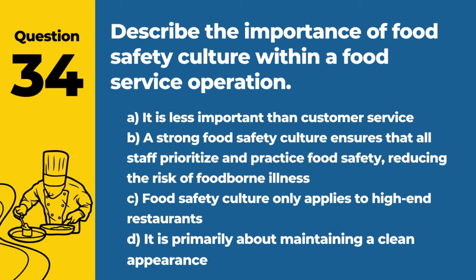Question 80. What factors contribute to the virulence of E. coli O157:H7 in ground beef? Answer: B. Its ability to survive under acidic conditions and low cooking temperatures. E. coli O157:H7's resilience in various environments makes it a particularly dangerous pathogen in ground beef.